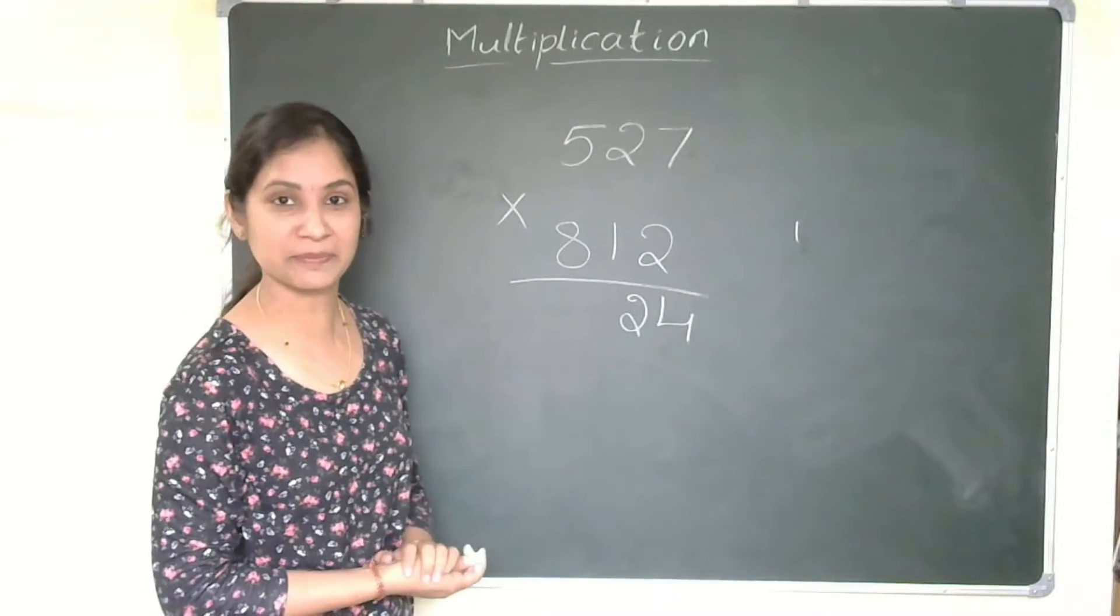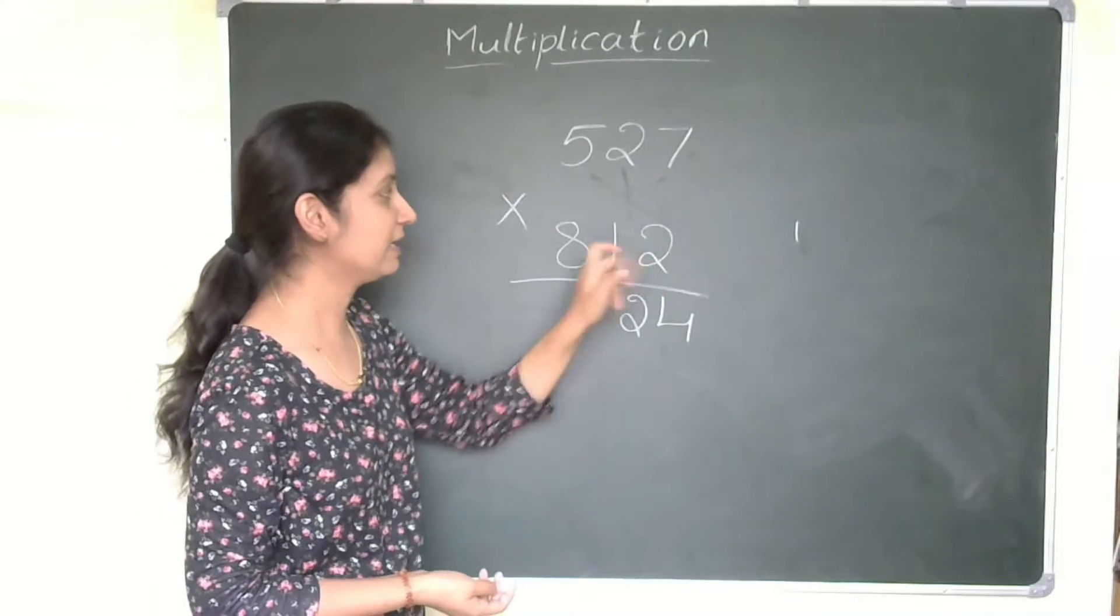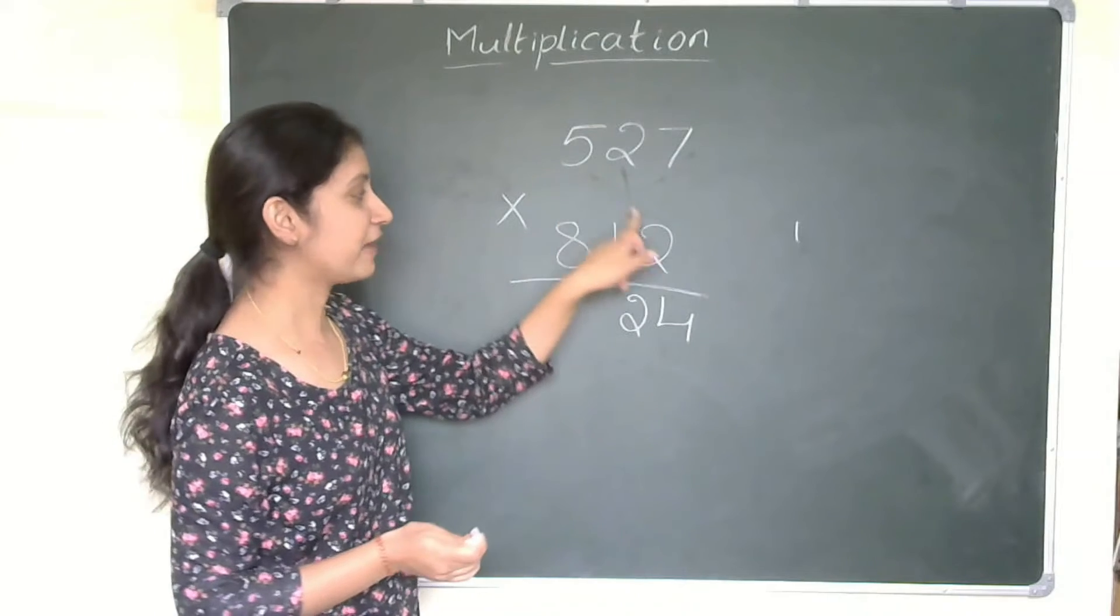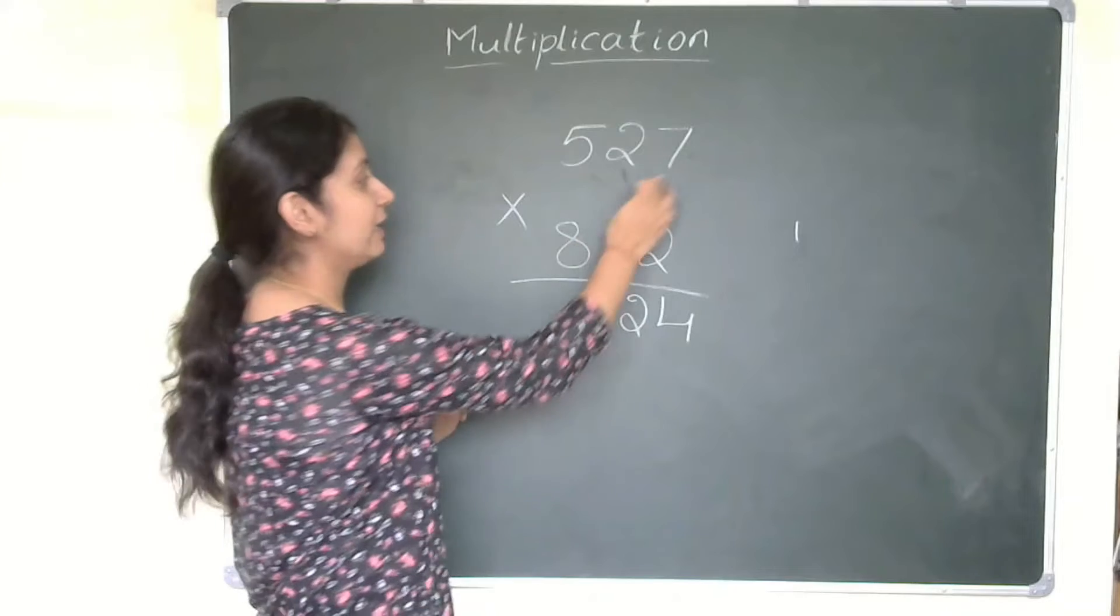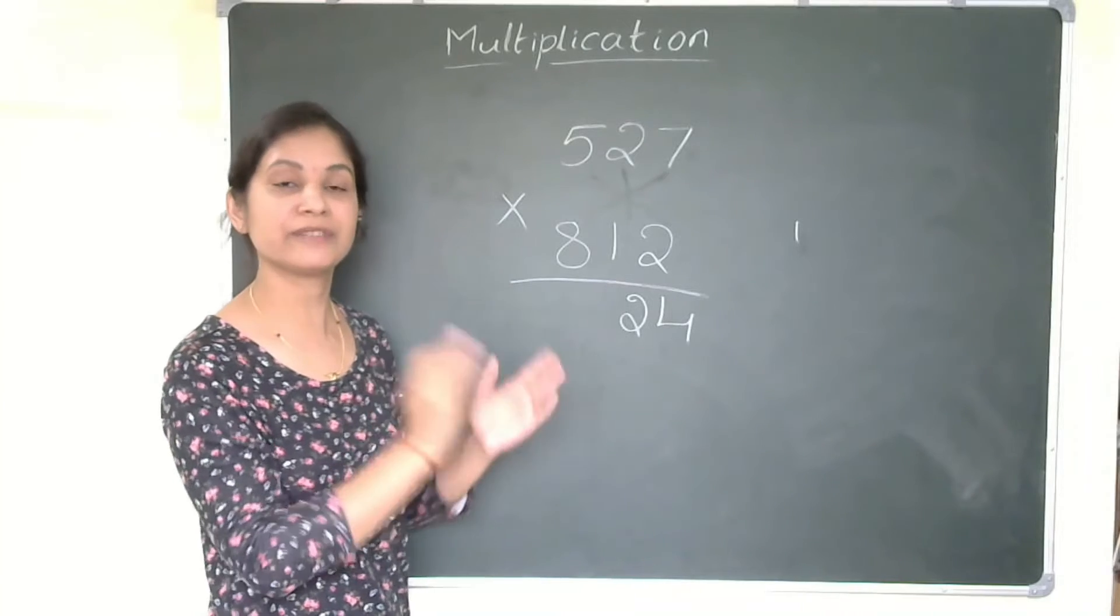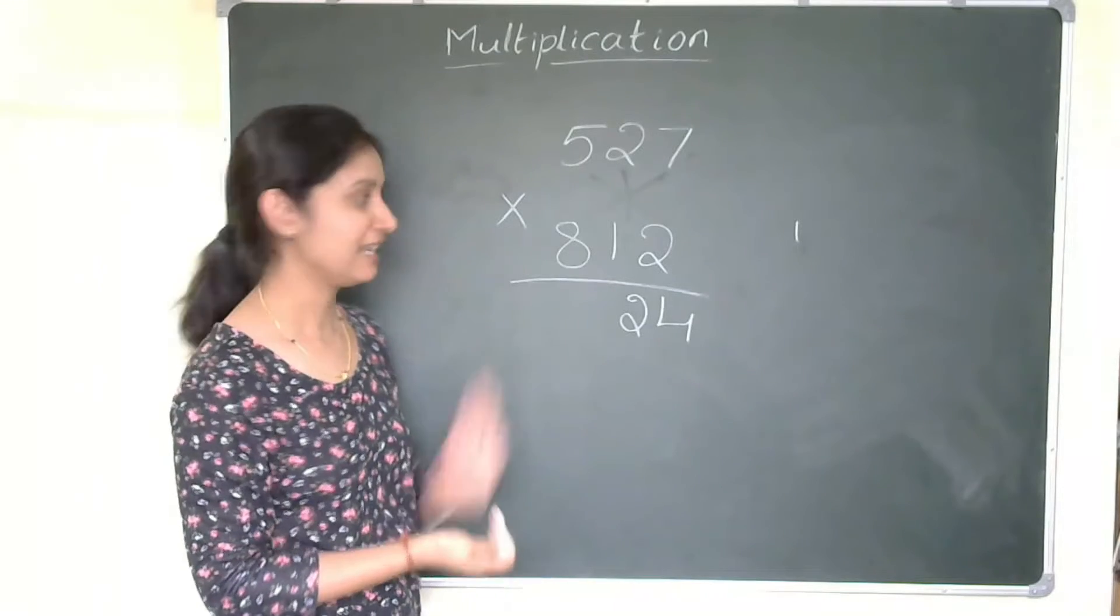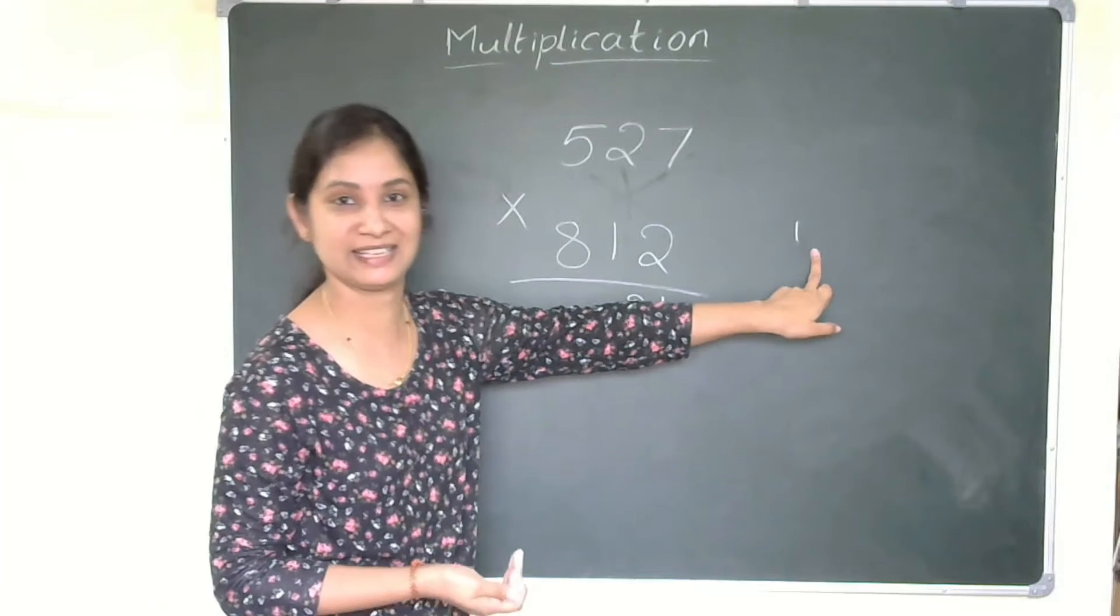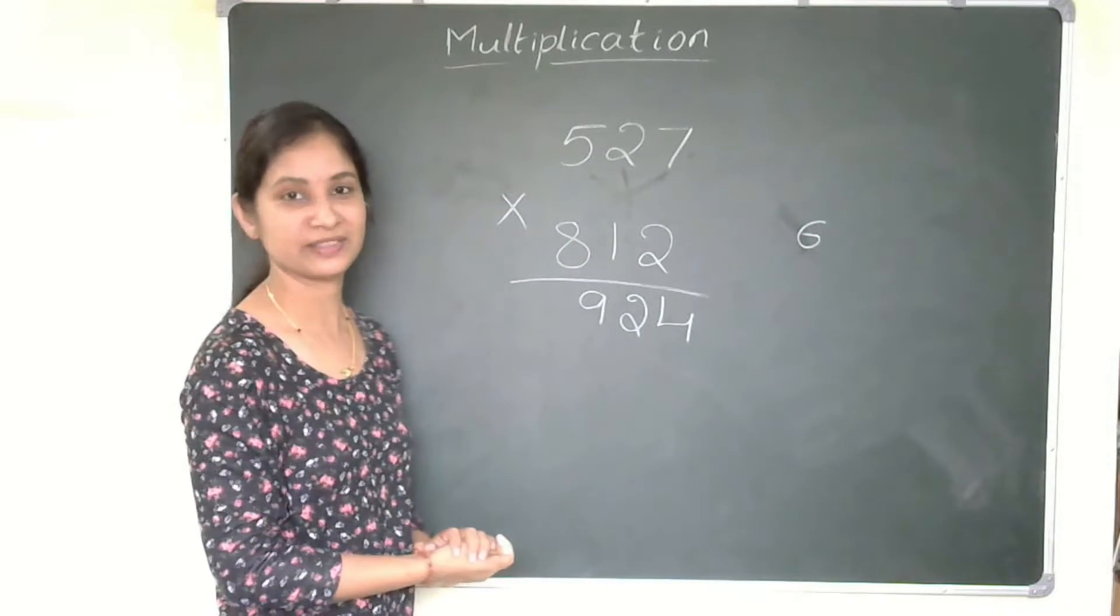Now my third step. Middle values multiply this, end values you will multiply, and then you will add the product. 2×1 is 2, plus 5×2 is 10, 10 plus 2 is 12. 8×7 is 56, 56 plus that 12, 56 plus 10 is 66 plus 2, 68. That 68 and this one, 69. So I will write 9 here. Now 6 is the carryover.